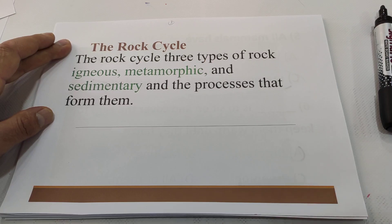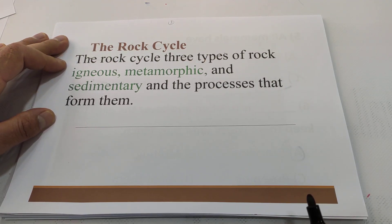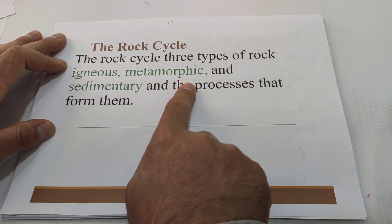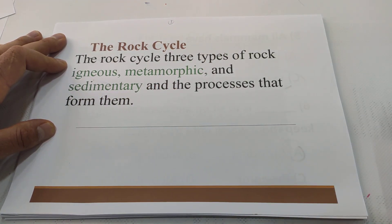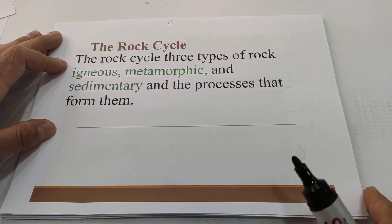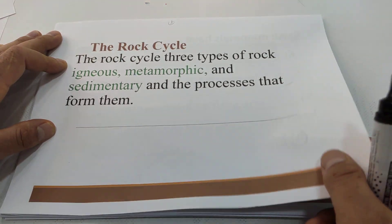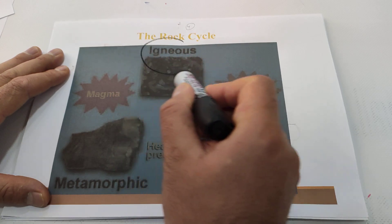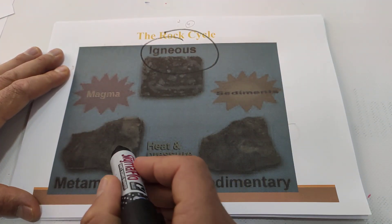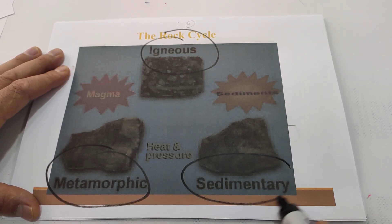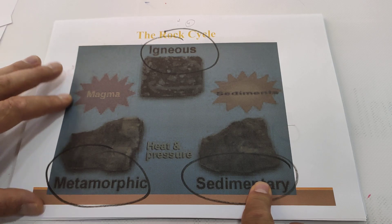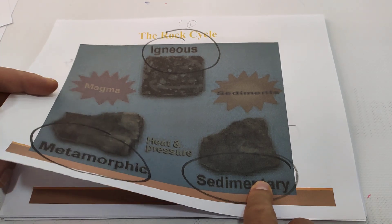The rock cycle involves three types of rock: igneous rocks, metamorphic rocks, and sedimentary rocks, and the processes that form them. Those three kinds of rocks change into each other. There are three kinds of rocks — igneous rocks, metamorphic rocks, and sedimentary rocks — and don't forget that.